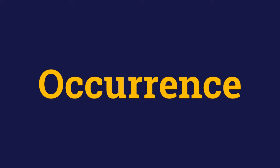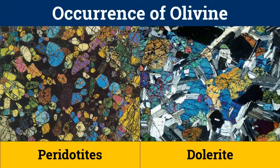Next, we shall talk about occurrences of olivine. Olivine is found in the rocks of peridotites, gabbro, dolerite, and dunite. Peridotites are rocks having olivine and pyroxene minerals, and in dolerite, large olivine grains have plagioclase feldspar inside them.